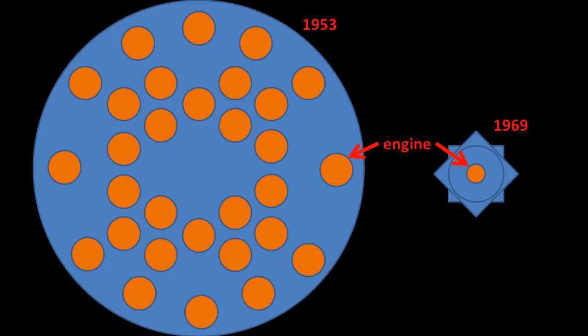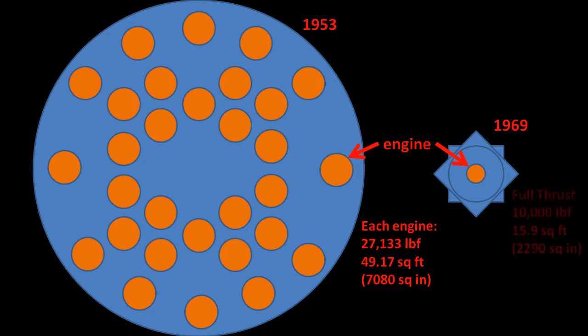Compare the footprint of the 1953 concept rocket to the lunar module. Each of the 30 engines has a thrust of 13.56 tons and an exit area over 49 square feet. Both numbers are about 3 times larger than the single lunar module descent engine.